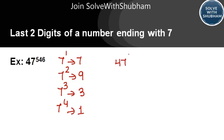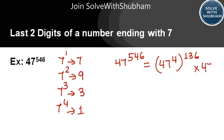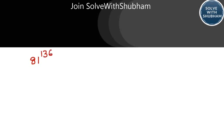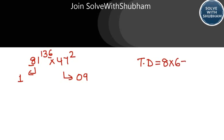So 47 to the power 546 can be written as 47 to the power 4, raised to 136, with 2 remaining. We find the last two digits of 47 to the power 4 — working through 81 to the power 136 — and then multiply by 47 squared. 47 squared has last two digits 09. The result ends with 29, so the last two digits are 29.